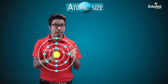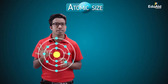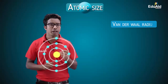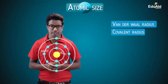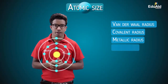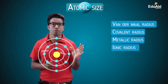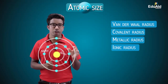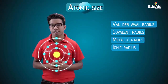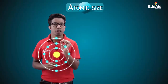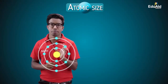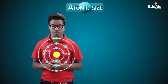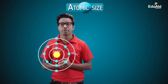When the atom is in combination with other atoms, atomic size changes. For those situations we have other terms like Van der Waal radius, covalent radius, metallic radius, and ionic radius. We are not going to deal with these terms right now — you will learn about them in higher classes. For now, whenever the term atomic size comes, it means the size of an isolated atom.